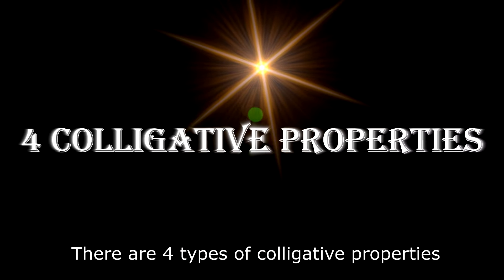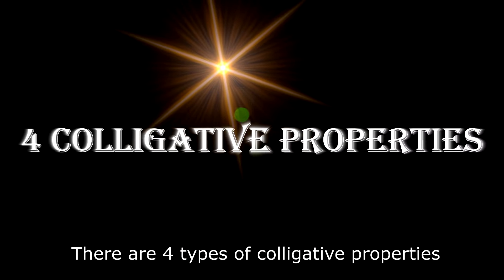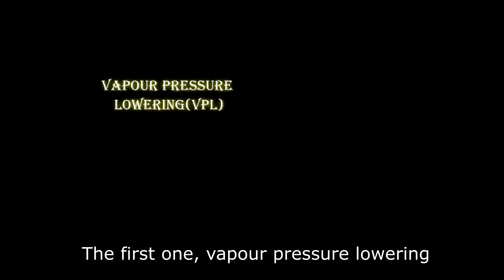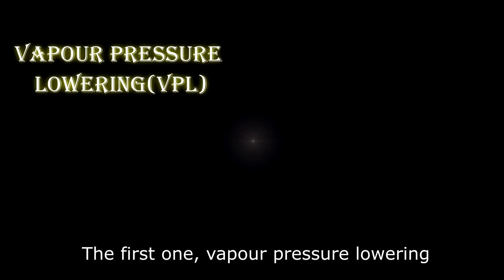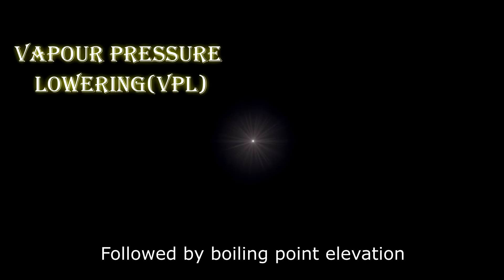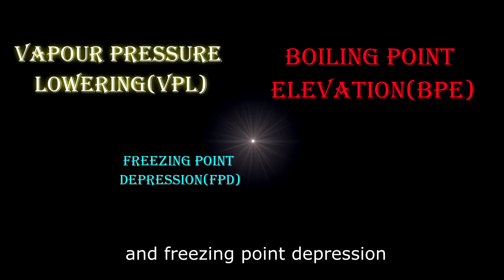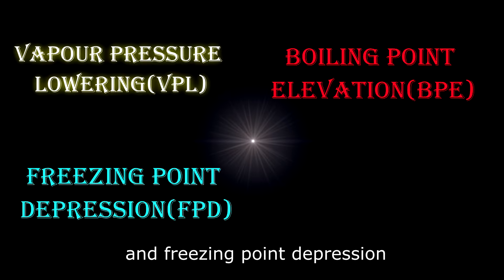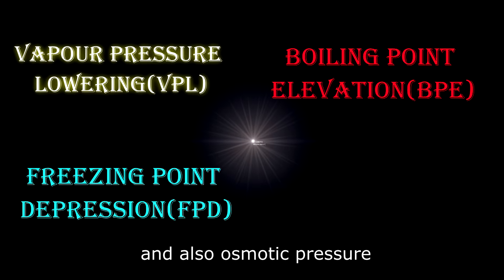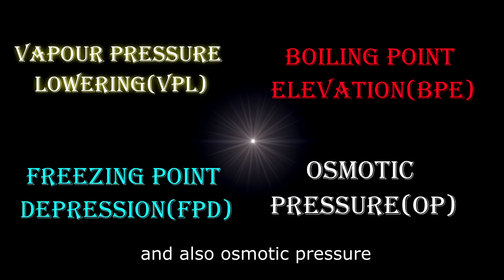There are four types of colligative properties. First one, vapor pressure lowering, followed by boiling point elevation and freezing point depression, and also osmotic pressure.